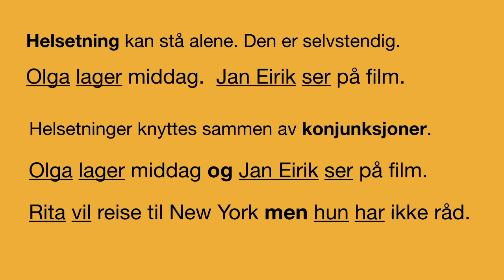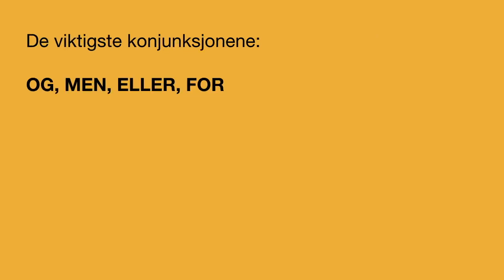Another conjunction is 'men'. Rita vil reise til New York, men hun har ikke råd. Rita wants to travel to New York, but she cannot afford it. The first part is a main clause — subject and verbal construction — and after 'men' we have another equally important sentence: hun har ikke råd, again subject and verb. Some more conjunctions: men, eller, and for — 'for' in the meaning of 'because'.